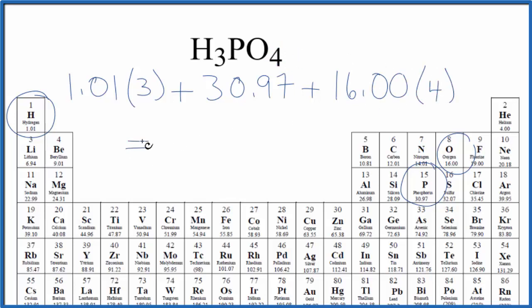When we add all this up, we end up with a molar mass for H3PO4, 98.00, and the units are grams per mole.